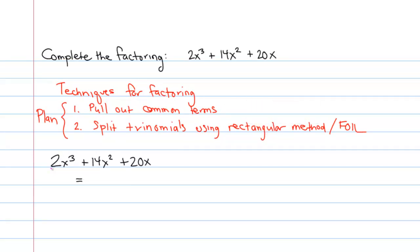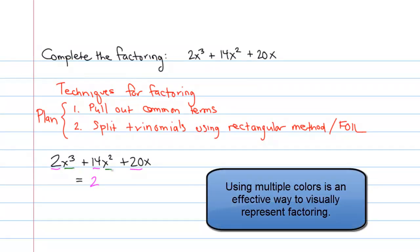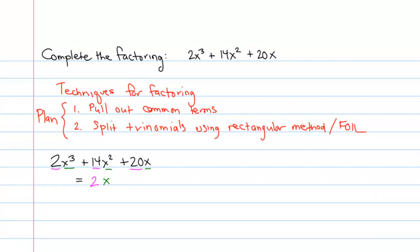Now, given all of the constants, the 2, the 14, and the 20, it's clear that there's a 2 who's common to all of these. Also, given the x cubed, the x squared, and the x, there's an x common to all of these terms. And so 2x is the largest common term I can pull out. So let's do that. If we pull out a 2x from 2x cubed, the 2 is gone. One of the x's is gone, which means there's an x squared left over.